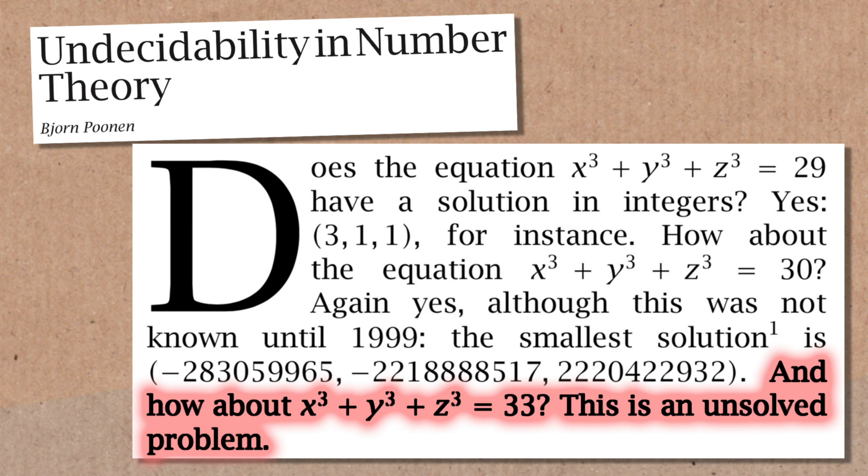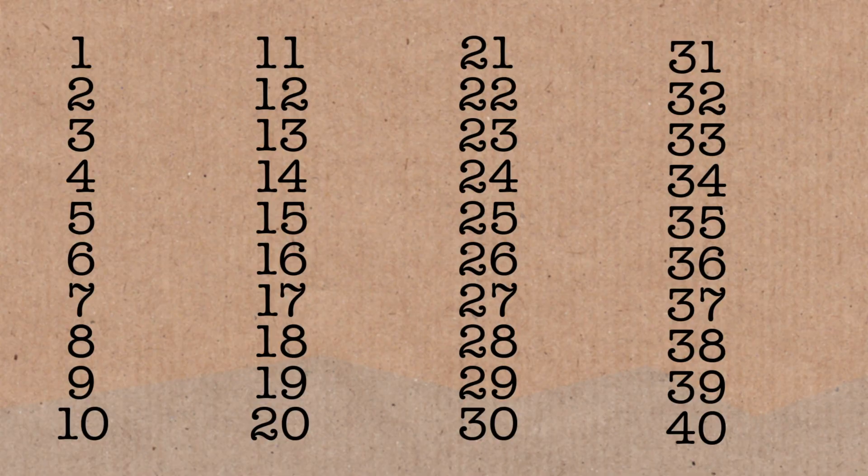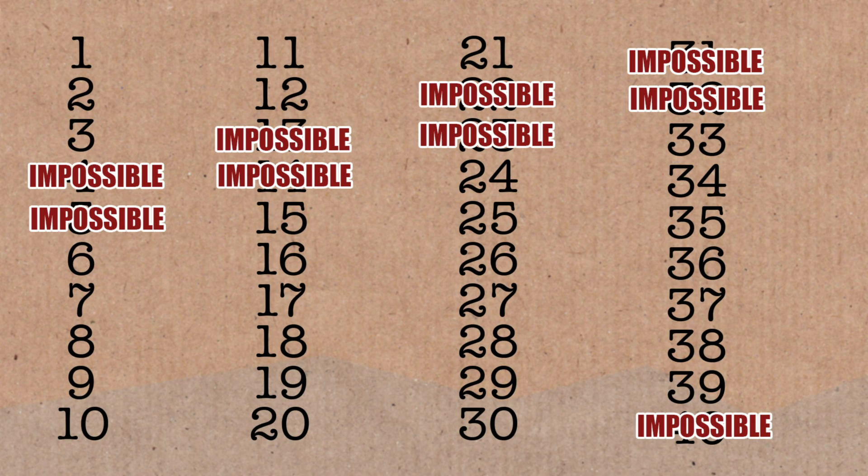And Andrew, as I understand, there are some numbers that you will never find one for. That's right. So if your number, if you divide it by 9 and you get a remainder of 4 or 5, then we know you can't do it.